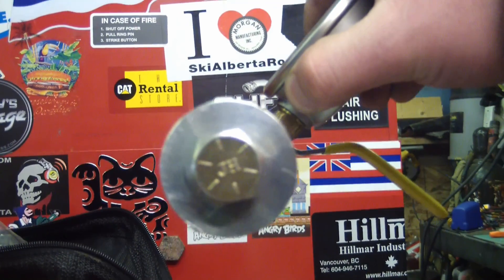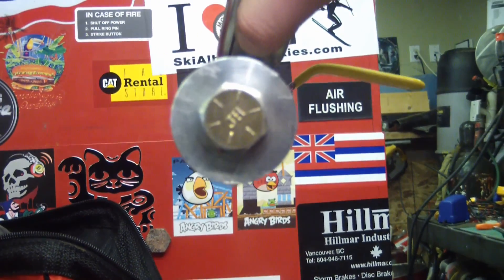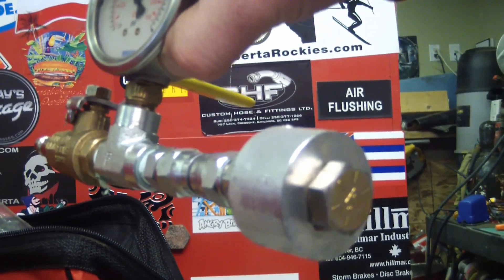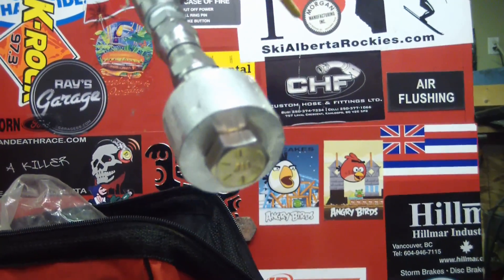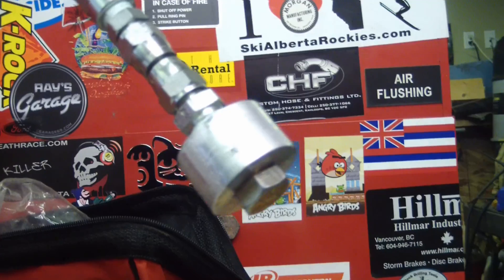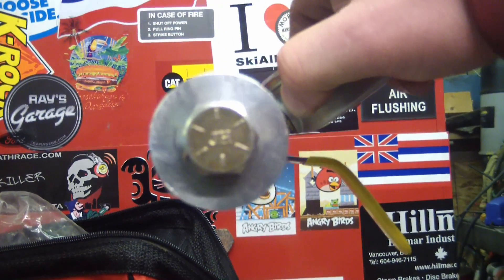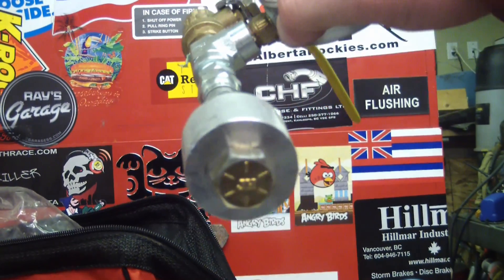If you want it to not leak at all, you could probably just grab some random industrial shmoo and jam it in there, some sort of thick grease or whatever you find on the ground. And that would eliminate that spiral leakage path and then you wouldn't get any leaks.